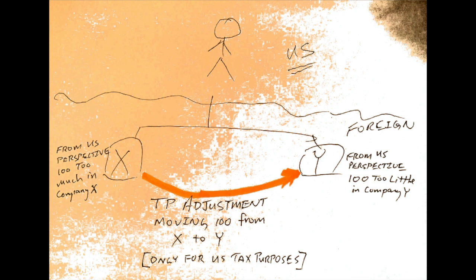Now, does this affect the taxation of X and Y in the United States? No, it doesn't, as long as we're making the assumption that X and Y are not conducting any U.S. trade or business and have no effectively connected income. This won't affect the direct U.S. taxation of X and Y.